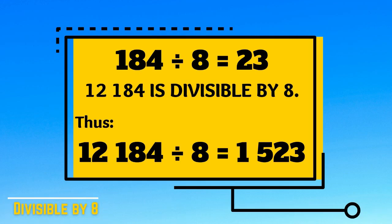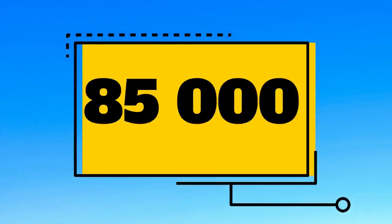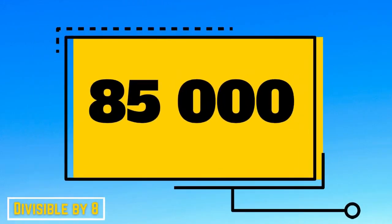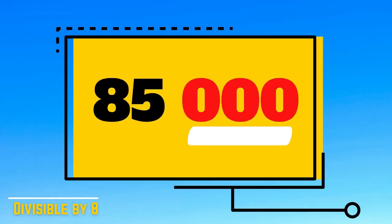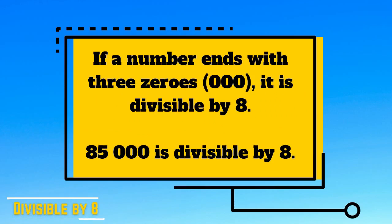This time, let's have 85,000. Is 85,000 divisible by 8? Let's take a look at the last three digits of the number. The last three digits of 85,000 are three zeros. The rule states that if a number ends with three zeros, it is divisible by 8. Thus, 85,000 is divisible by 8.